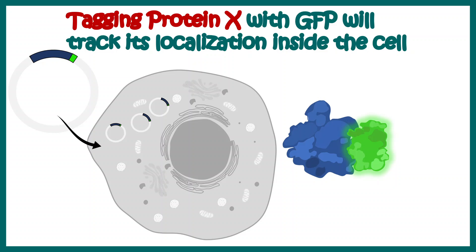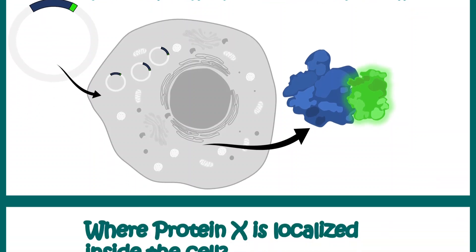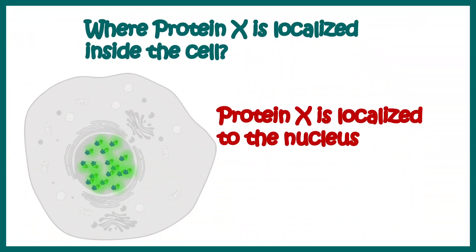When this particular protein is transcribed and translated, we can see the fluorescence. In this case we can see all the fluorescence coming from the nucleus, which means protein X is localized in the nucleus. This is one type of application.